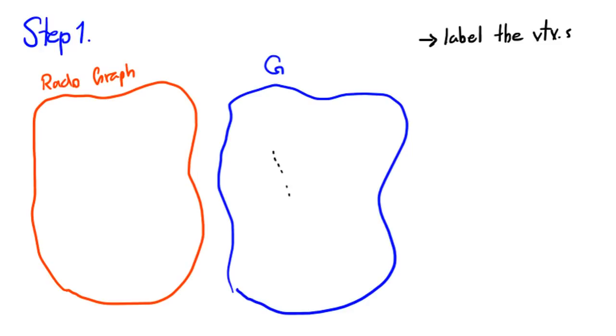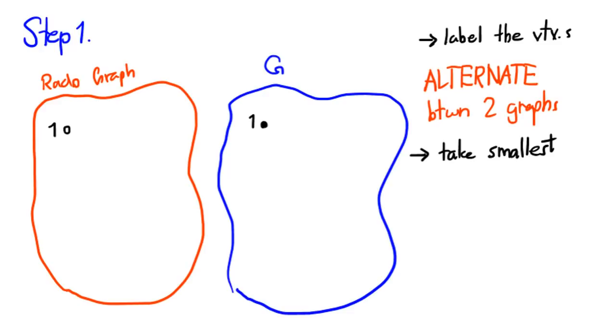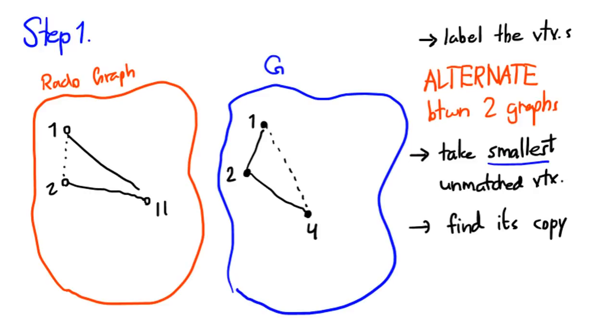Instead of looking only at the Rado graph and finding the partners, we'll alternately give our attention to both G and the Rado graph. Let's see. As before, identify 1 with 1. Then look for the smallest unmatched vertex in the Rado graph and find its copy inside of G. Next, we switch our attention to the smallest unmatched vertex inside of G and find its copy back in the Rado graph.